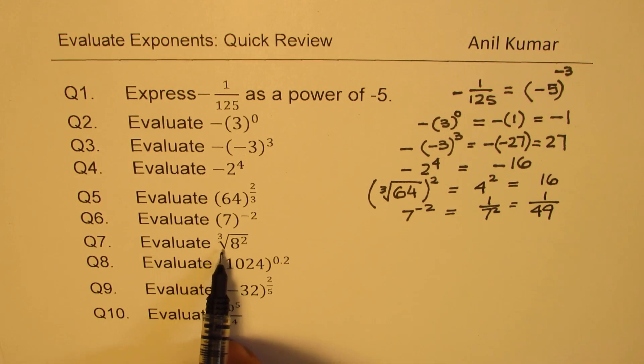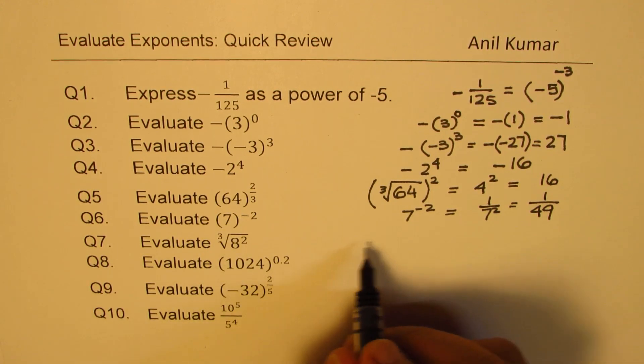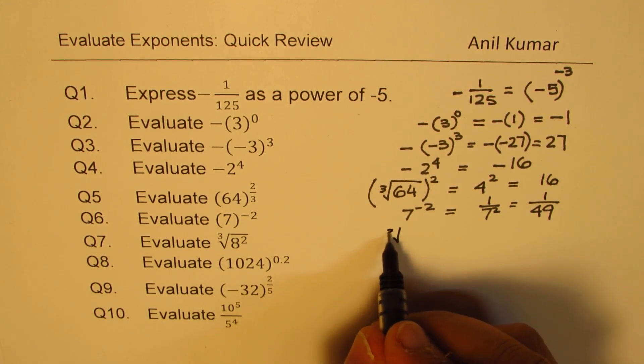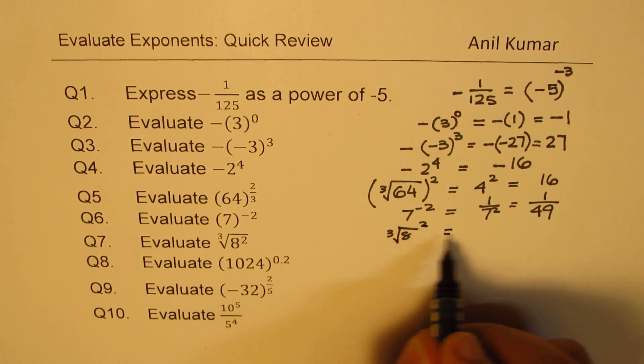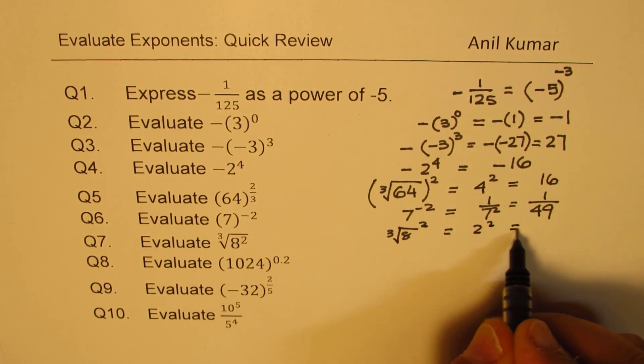Evaluate cube root of 8 square. This is very similar to what we just did. So cube root of 8, and then we could square it. Cube root of 8 is 2. So we get 2 squared, so the answer is 4.